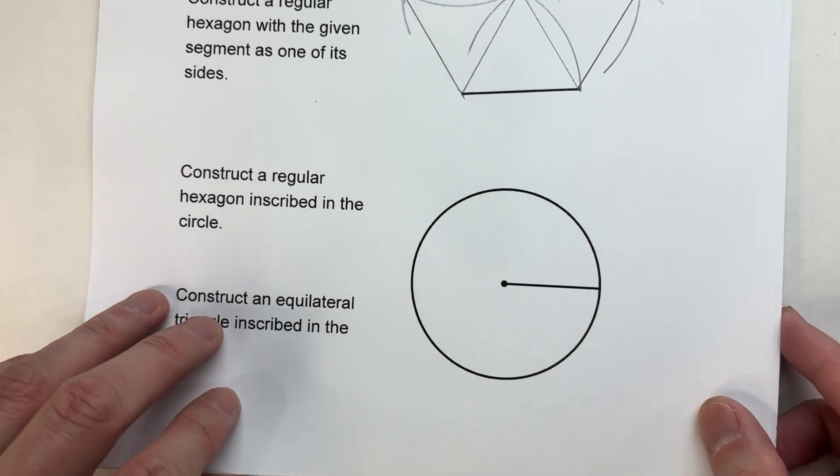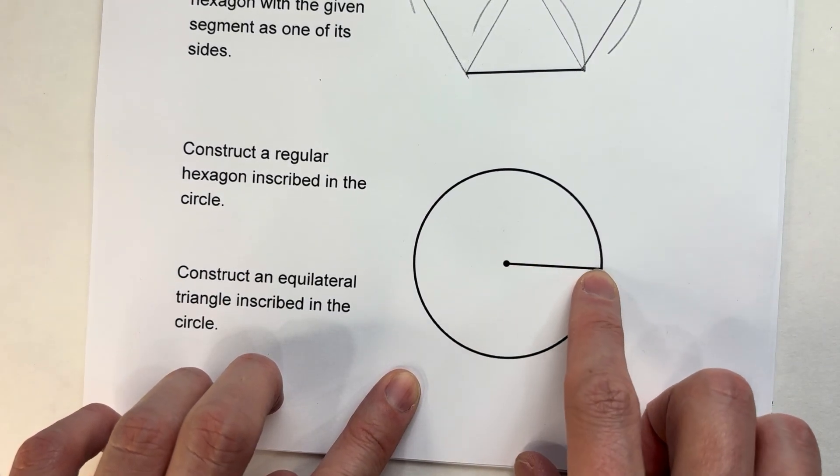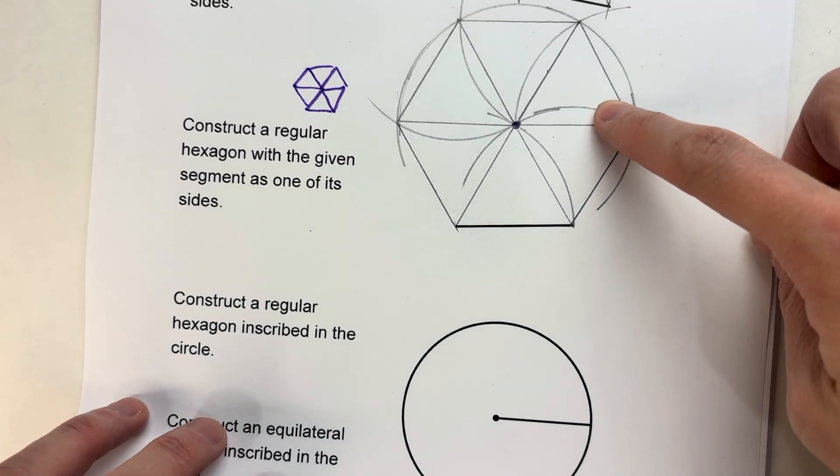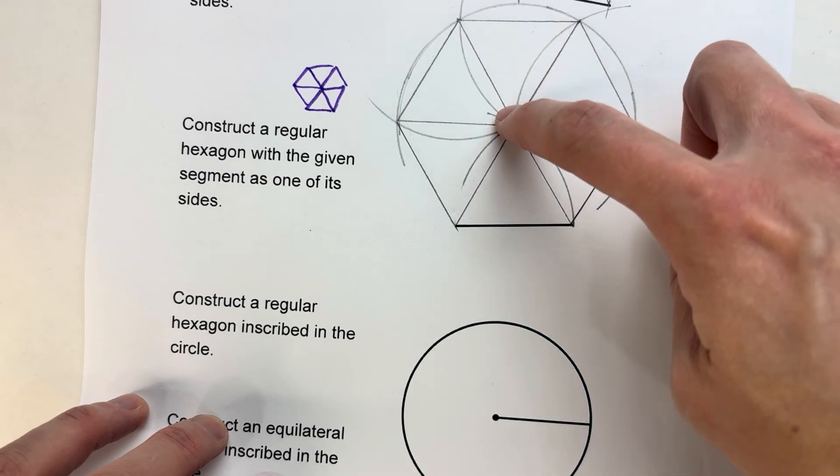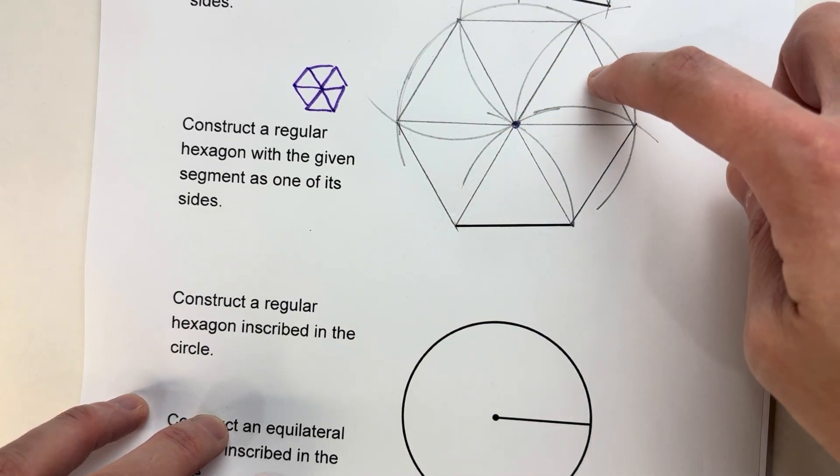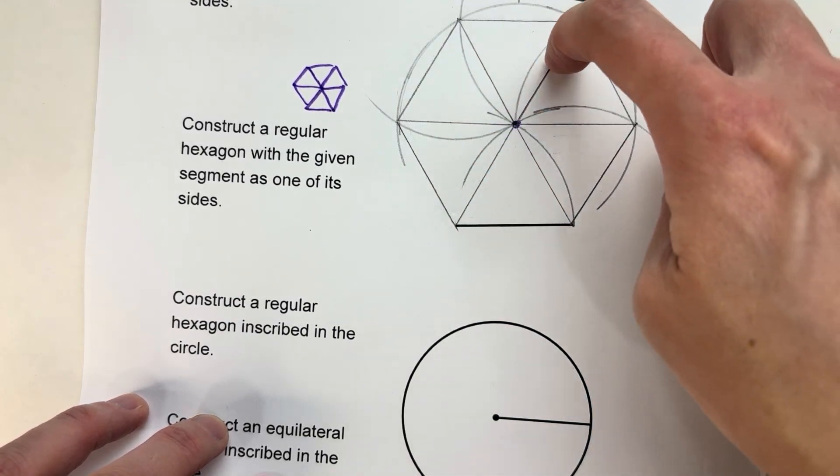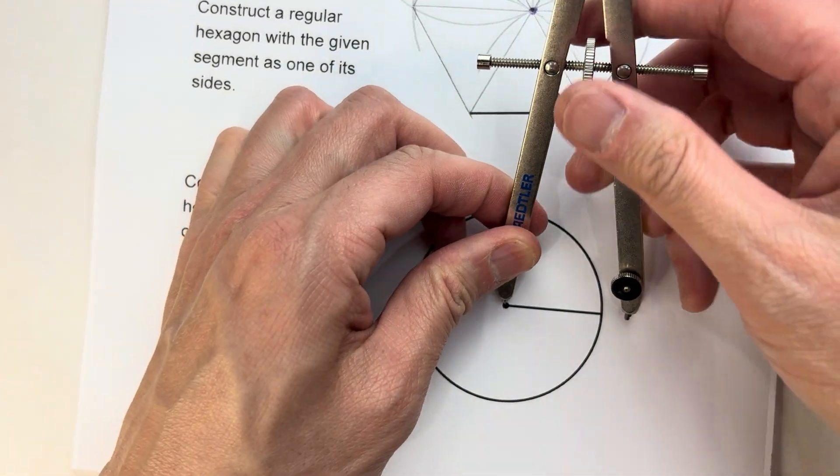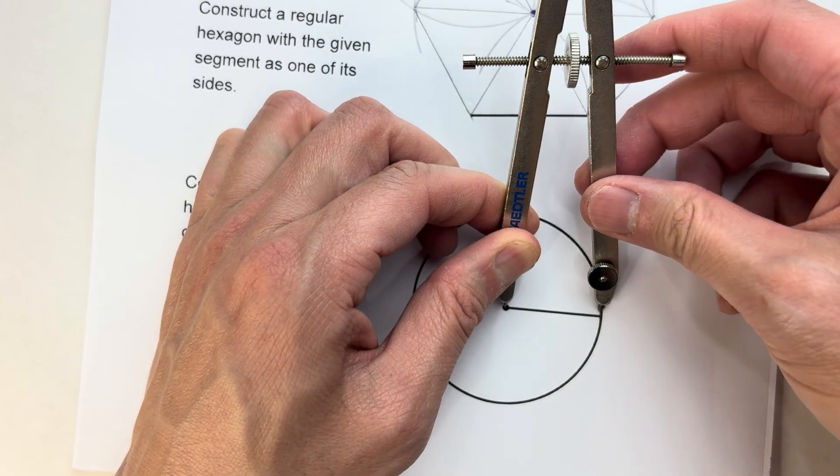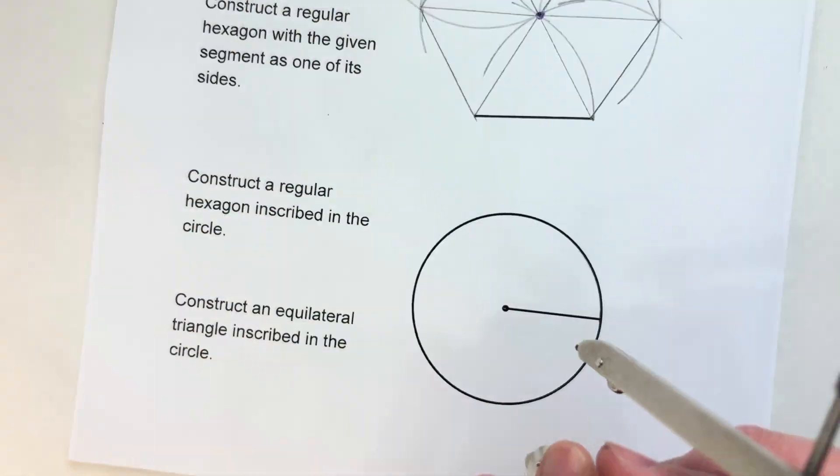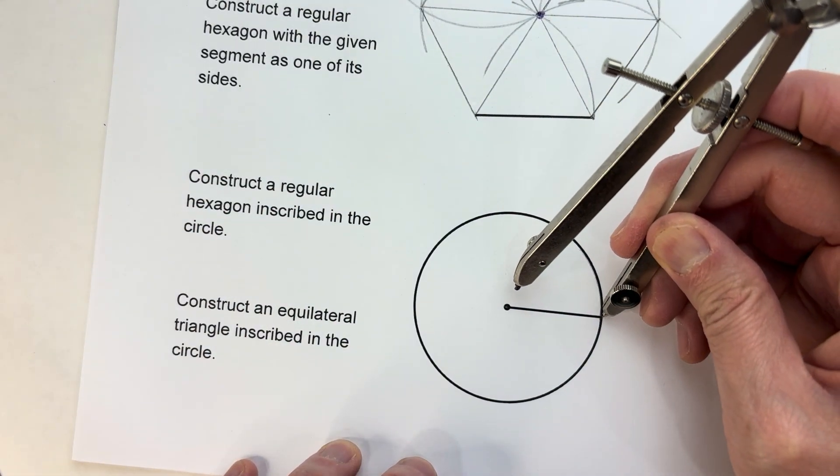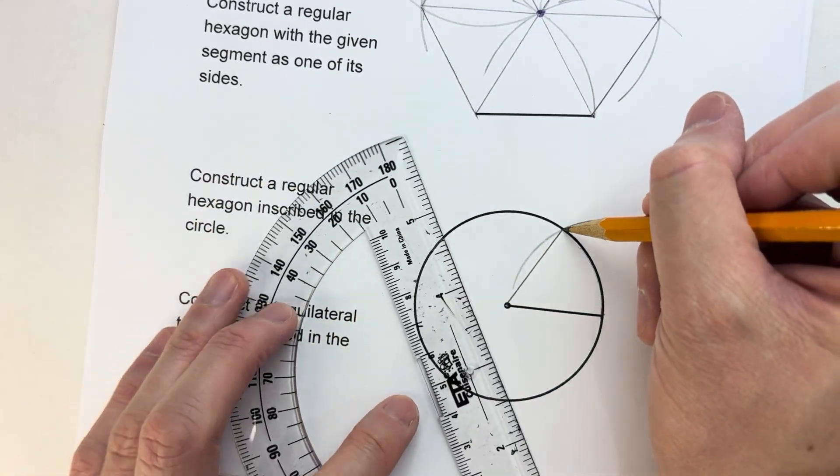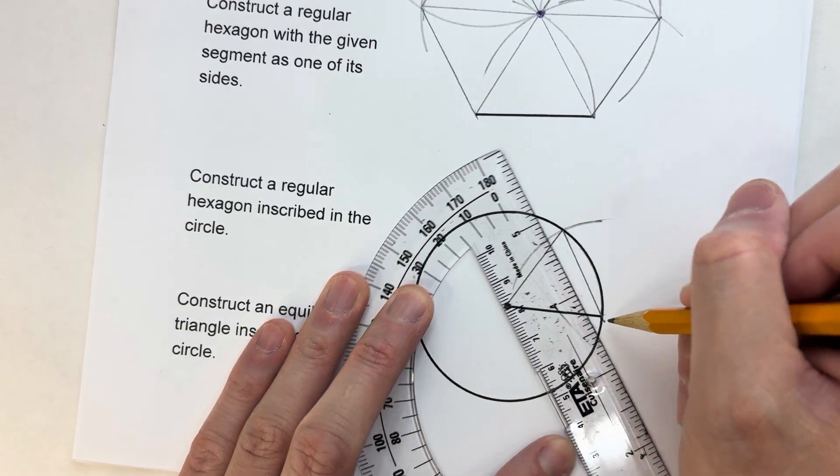To construct that, we're basically going to use the radius of our circle. We're going to do the same thing we did here: use the radius as one side of an equilateral triangle, then repeatedly make those equilateral triangles and we'll have our hexagon. It will be inscribed within the circle. Here is the length of my radius. I'm going to repeat this distance right here, and there's my first equilateral triangle.